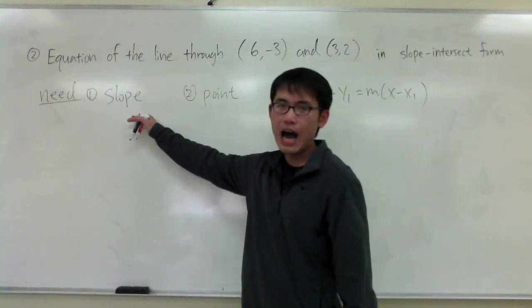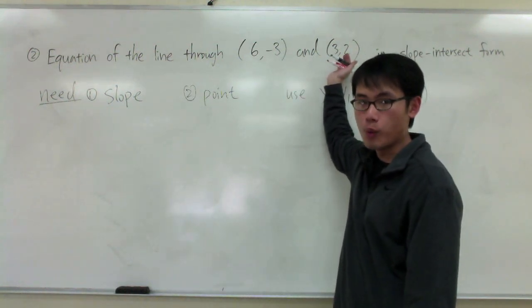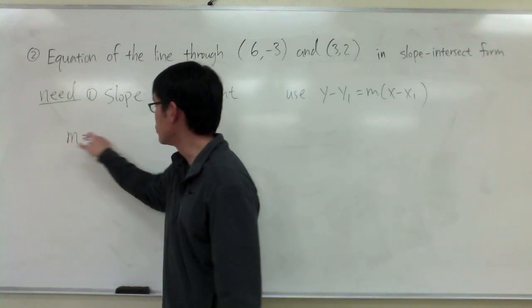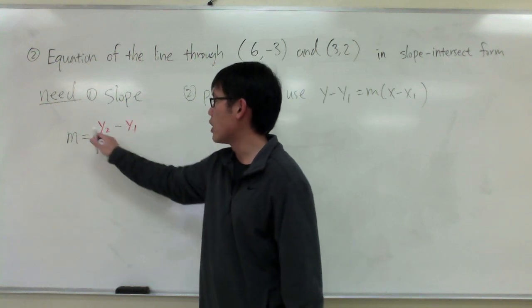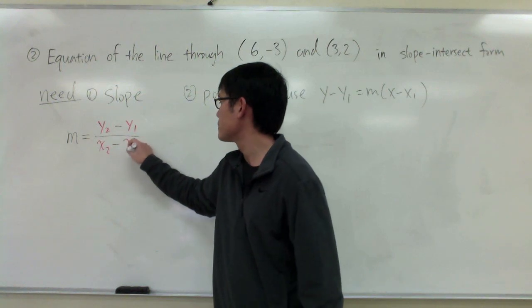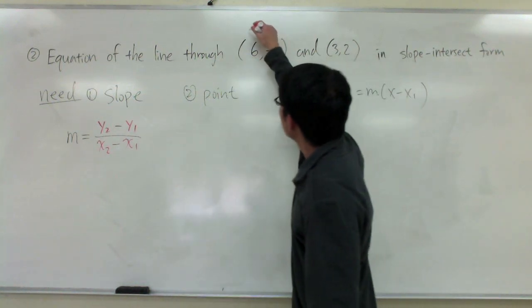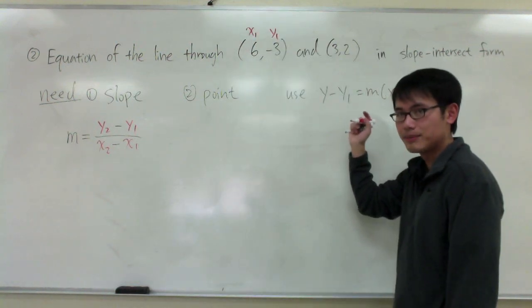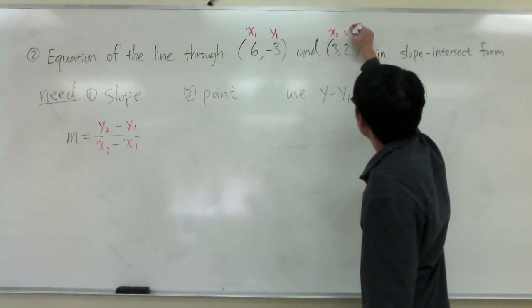So let's begin by how do we find the slope. We are given two points. So we should use the slope formula that m denotes the slope, which is the same as y2 minus y1 over x2 minus x1. We have two points. The first point, I'm going to label this as x1 and y1. And the second point, 3, 2, I'll label that as x2, y2.